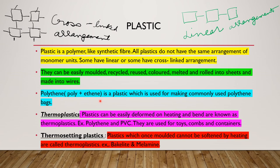Polythene: poly plus ethene is a plastic which is used for making commonly used polythene bags. Thermoplastics: plastics that can be easily deformed on heating and bent are known as thermoplastics. Examples: polythene and PVC. They are used for toys, combs and containers. Thermosetting plastics: plastics which once molded cannot be softened by heating. Examples: bakelite and melamine.